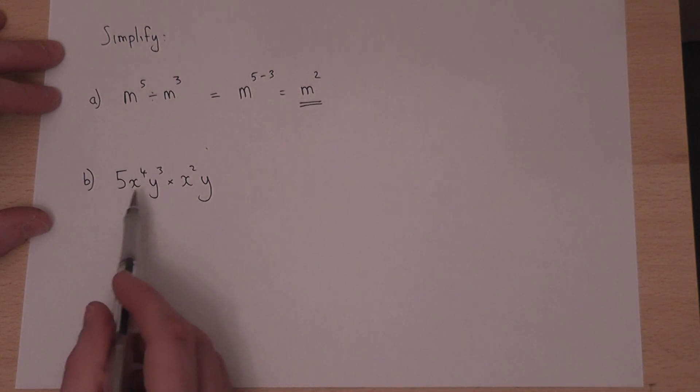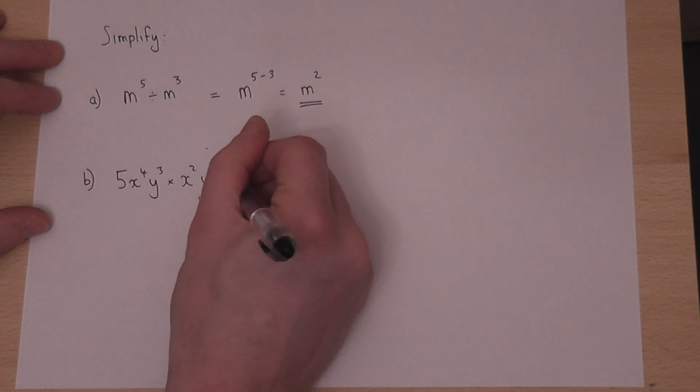In the second one, we're multiplying together two expressions. When we multiply, we add the powers.